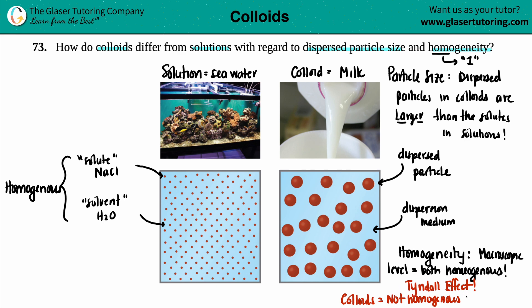Colloids are not homogeneous at the microscopic level. However, the particles are small enough that they won't settle to the bottom — if you keep milk in the fridge, the particles aren't going to sink all the way down; it remains one unified colloid. But the key idea is that Tyndall effect, and that answers the question.